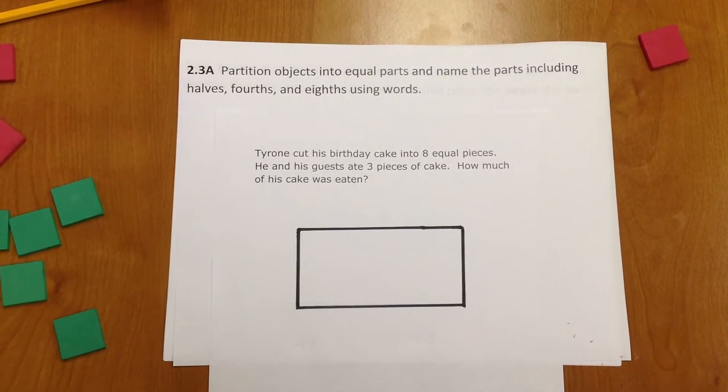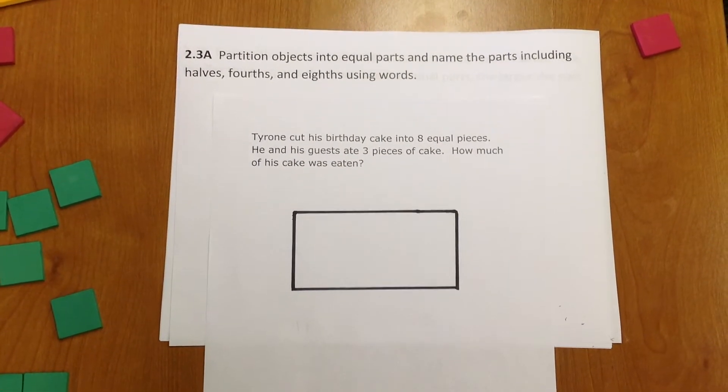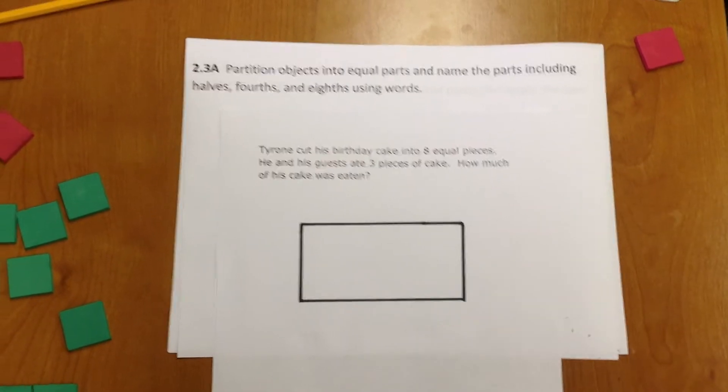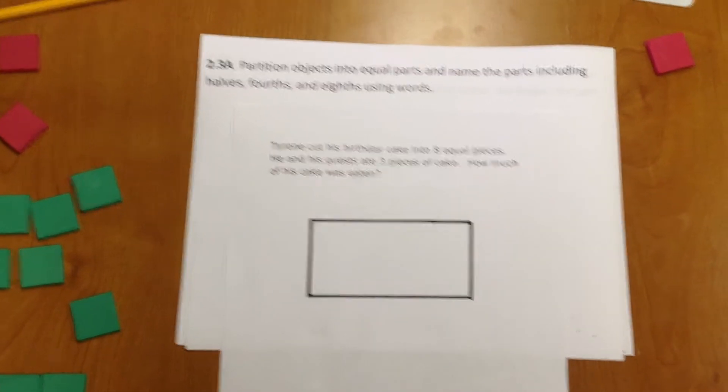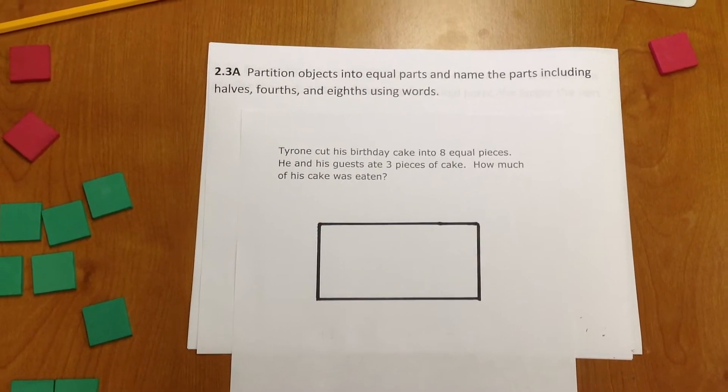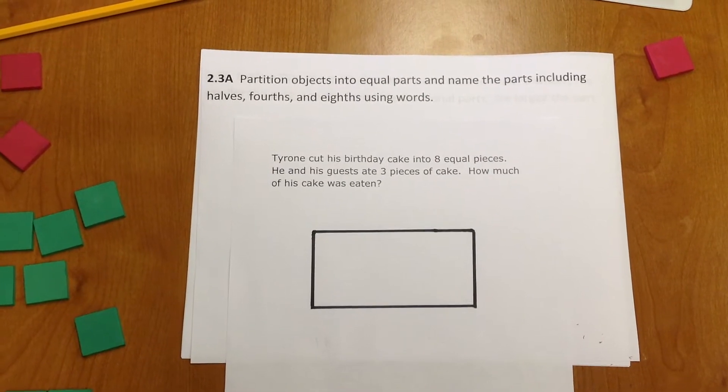Let's look at TEKS 2.3A, which says partition objects into equal parts and name the parts including halves, fourths, and eighths using words.